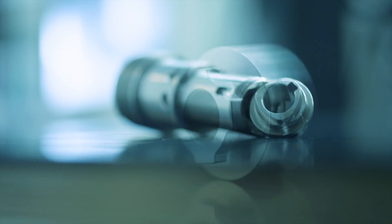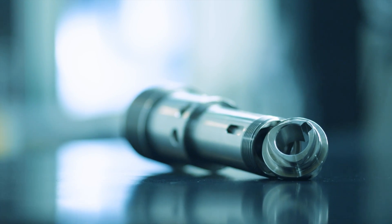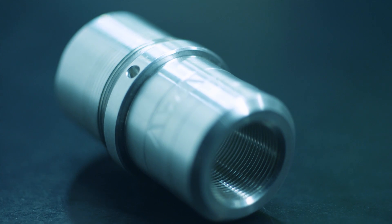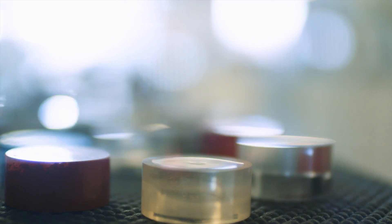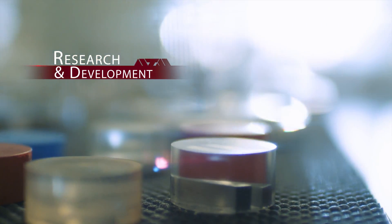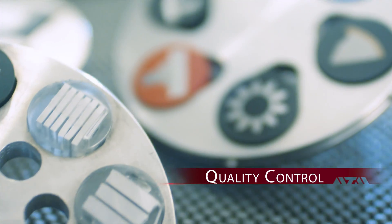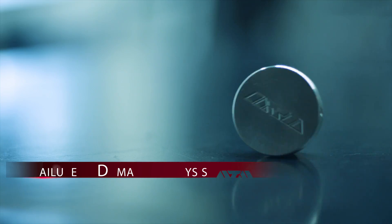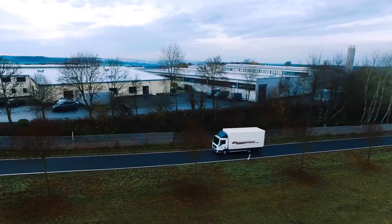To understand quality, you need to pay attention to details. Details which may be hidden from view. ATM uncovers the hidden with groundbreaking machines and products for materialographic sample preparation and analysis as part of the quality control process.